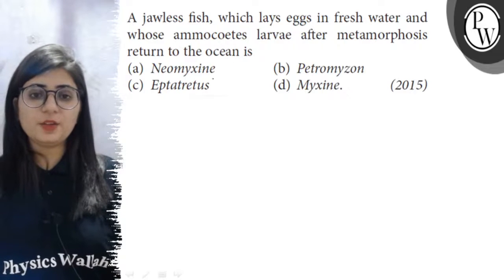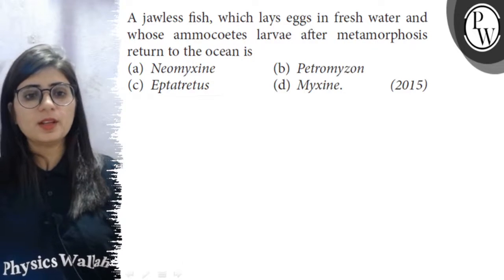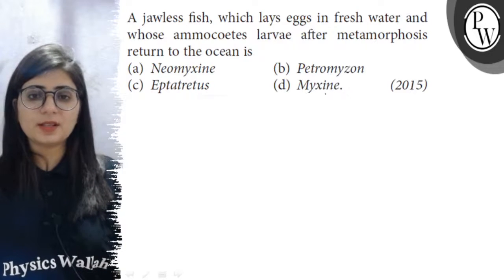And the options are: A. Neomyxin, B. Petromyzon, C. Eptatratus, and option D is Myxin.